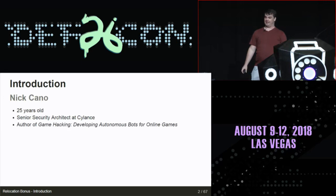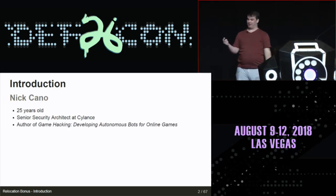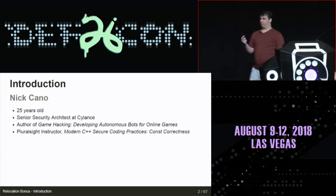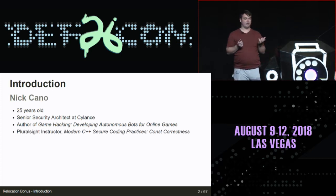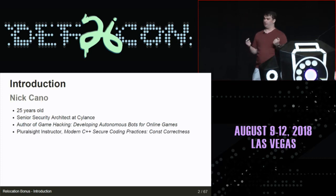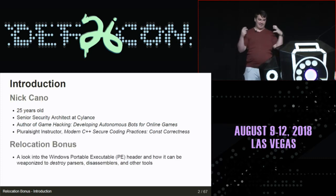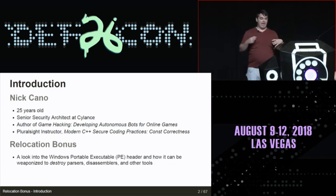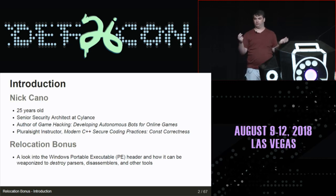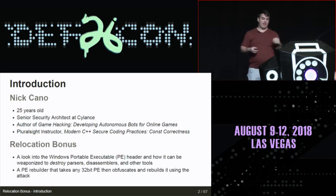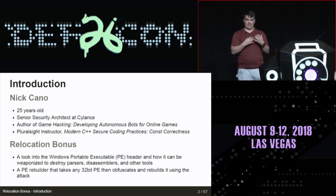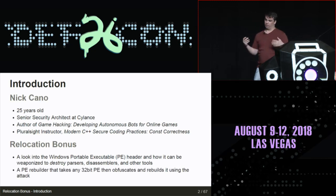I have written a book on hacking games, and I'm also a Pluralsight author - just had a course published about a month ago on C++ secure coding practices. This talk is essentially about the Windows Portable Executable header and how it can be weaponized to destroy parsers and other static analysis tools, like disassemblers. That all culminates in a PE rebuilder for 32-bit Windows binaries.